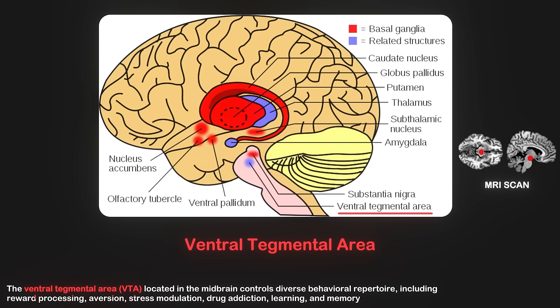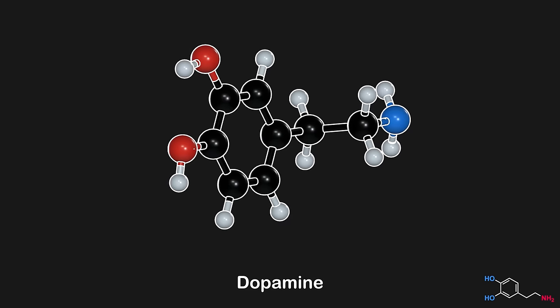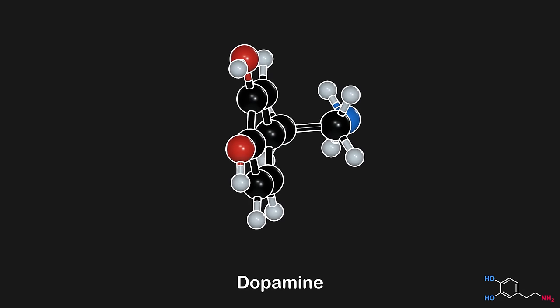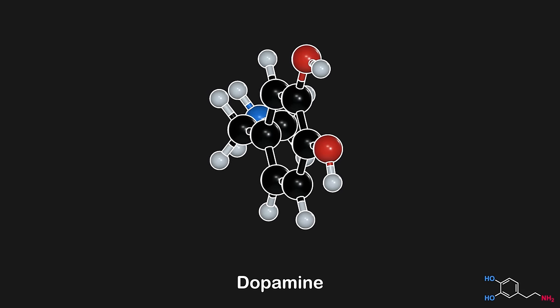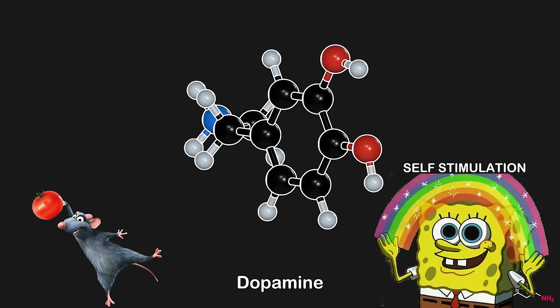The ventral tegmental area, located in the midbrain, controls diverse behavioral events. Notably, in experiments where these areas were electrically stimulated, a hungry rat would often give up food for the sheer pleasure of self-stimulation. Sometimes you have to make your choices, it's either food or self-stimulation.